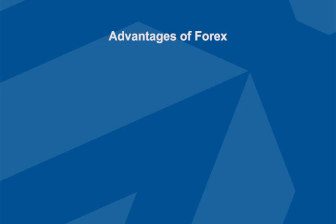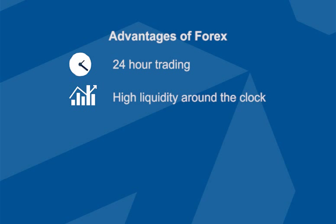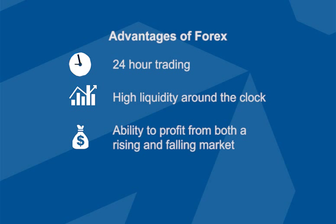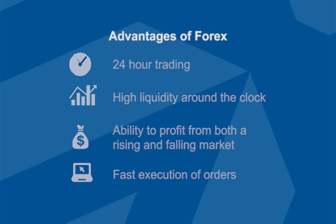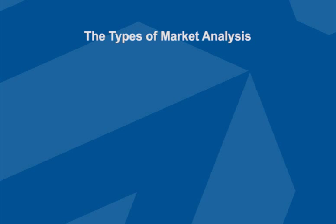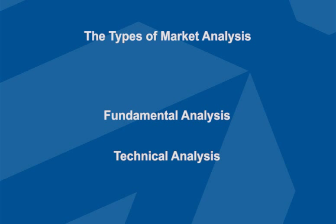Some of the advantages of the Forex market include 24-hour trading, which allows high liquidity around the clock. Another key advantage is the ability to profit from both a rising and a falling market — you can buy a currency you think will increase in value and also sell a currency you think will decrease in value. There is also fast execution of orders, and there are two types of market analysis: fundamental analysis, which covers economic analysis, and technical analysis, which is chart-based analysis.